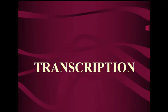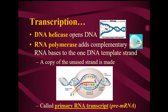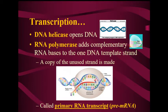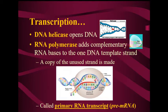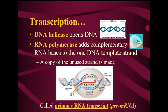RNA is made in a process called transcription. In transcription, DNA helicase opens the DNA, RNA polymerase adds complementary RNA bases to one DNA template strand, and a copy of the unused strand is made. This is called the primary RNA transcript, or the pre-mRNA.